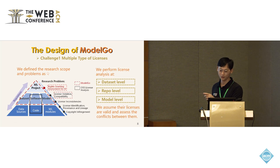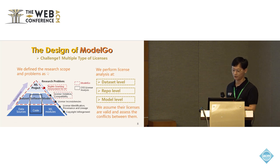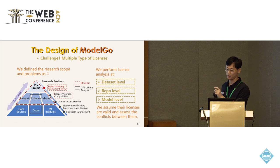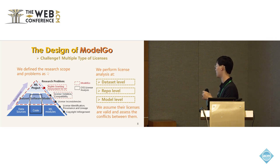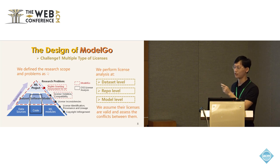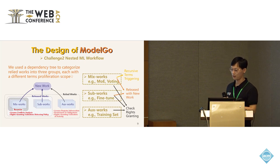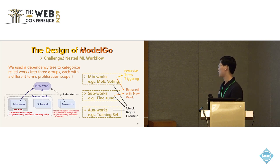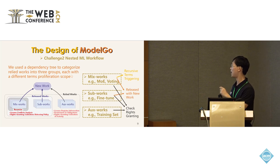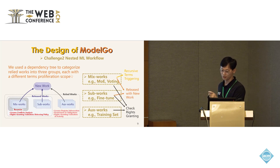We assume licenses are valid and assess conflicts between dataset licenses, software licenses, and model licenses. Here is our solution: we use a dependency tree to categorize all artifacts into three groups — mixed artifacts, sub-artifacts, and auxiliary artifacts. These three groups have different license proliferation scopes.